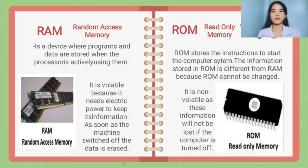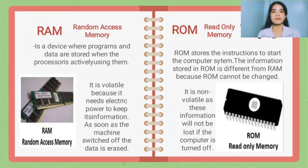RAM, also called random access memory, is a device where programs and data are stored when the processor is actively using them. It is volatile because it needs electric power to keep its information. As soon as the machine switches off, the data is erased.